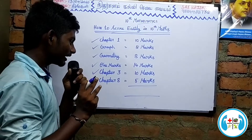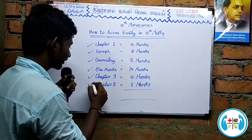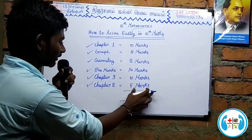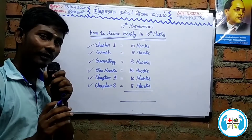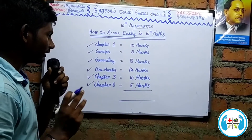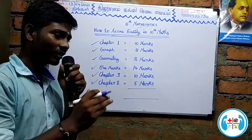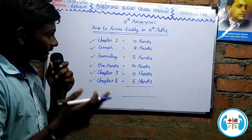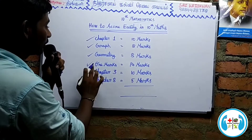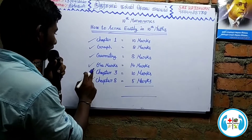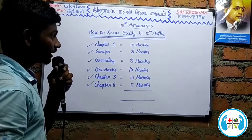Statistics and probability — that is very easy. You can score 5 marks, all the marks. First, we can cover all the marks. The first lesson is graph and geometry. 1 mark is very important. The third lesson is 8 marks. You can cover all the marks.